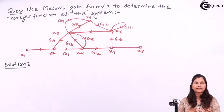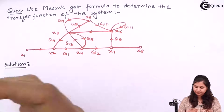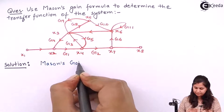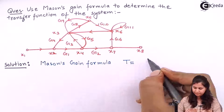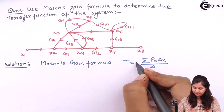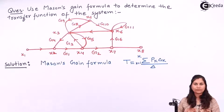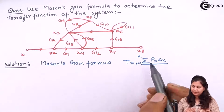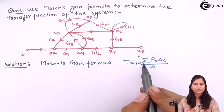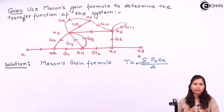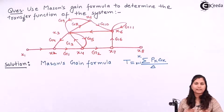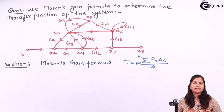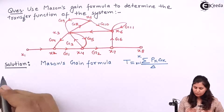The Mason's gain formula is given by: T is the transfer function of the system. Pk is the forward path gain and Δk is the determinant associated with the kth forward path. Δ is the graph determinant. The summation of Pk and Δk is from k equals 1 to K. So this is the Mason's gain formula and we will use it to find out the transfer function of this system.